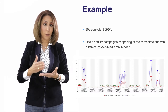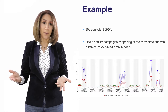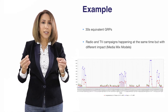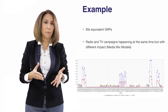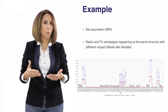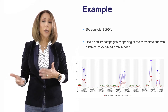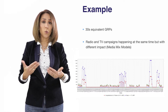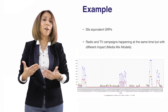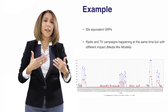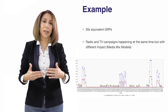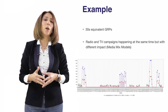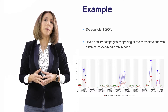Another application is creating media mix variables. For example, if TV and radio are running at the same time, it's difficult to put them in the same model due to multicollinearity. The solution is to create a weighted sum by assigning different weights to these variables, then test which set of weights best mimics the sales movements.